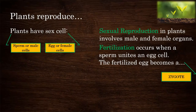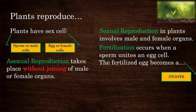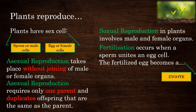Some plants undergo asexual reproduction. Asexual reproduction takes place without the joining of male or female organs. It requires only one parent and produces offspring that are the same as the parent.